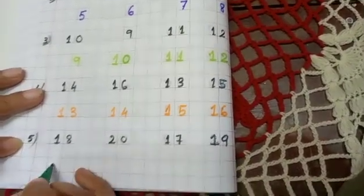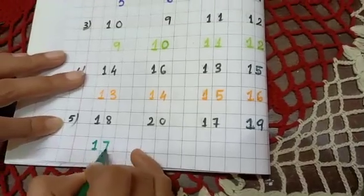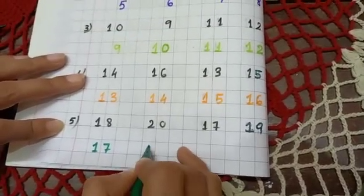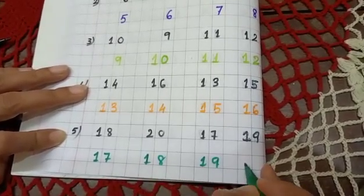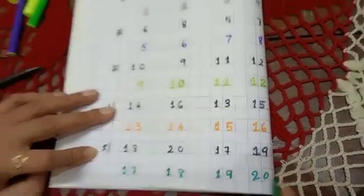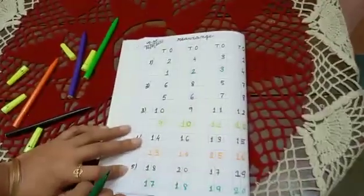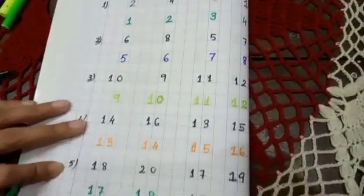So first one comes 17, 18, 19, 20. Thank you, children.